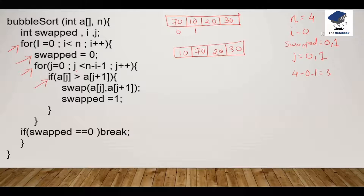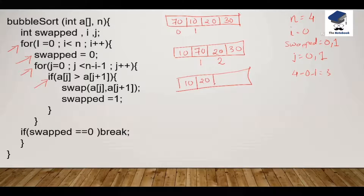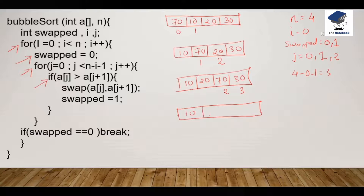Again we check: 1 is less than 3 — yes. We come under the nested for loop and check if a[1] is greater than a[2]: 70 is greater than 20 — yes. We again perform the swap. 20 goes to the left-hand side and 70 goes to the right-hand side, giving [10, 20, 70, 30]. We increment j to 2, swap is again 1. We check: 2 is less than 3 — yes. We check if a[2] is greater than a[3]: 70 is greater than 30 — yes. We swap 70 and 30: 30 goes to the left, 70 to the right. Swap becomes 1 and j becomes 3. Now 3 is less than 3 — no, so the nested for loop is terminated.